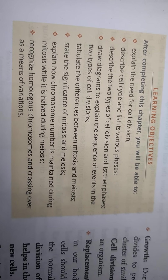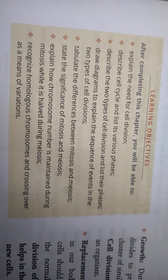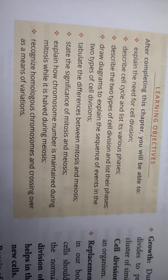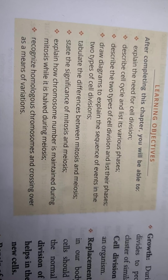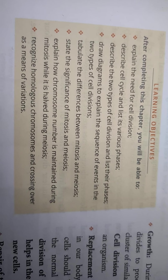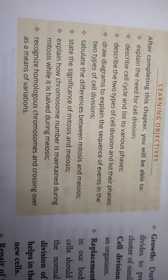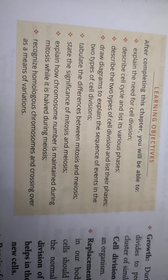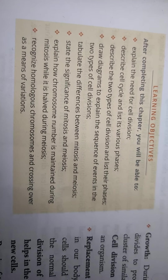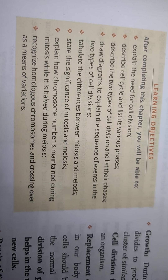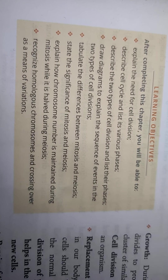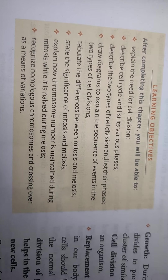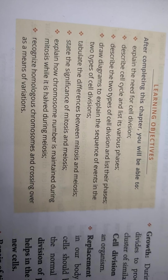Draw a diagram to explain the sequence of events in the two types of cell division, tabulate the differences between mitosis and meiosis, state the significance of mitosis and meiosis, explain how chromosome number is maintained during mitosis while it is halved during meiosis, and recognize homologous chromosomes and crossing over as a means of variation.